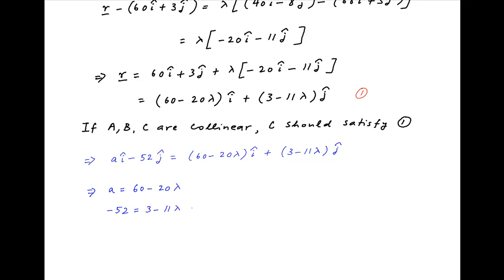Using the second equation we get 11 lambda is equal to 55 or lambda is equal to 5. Using this in the first equation we get A is equal to 60 minus 20 times 5 which is equal to minus 40.